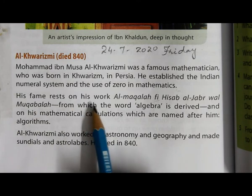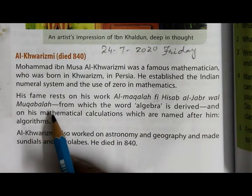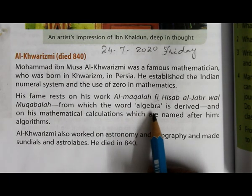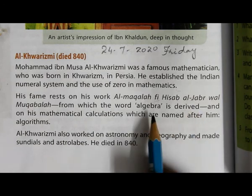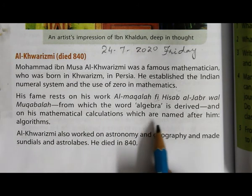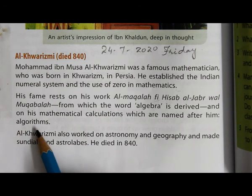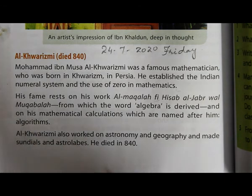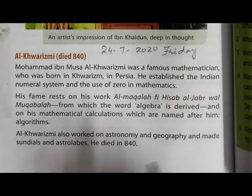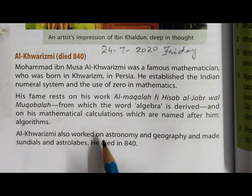His fame rests on his work 'Al-Mukhtasar fi Hisab al-Jabr wal-Muqabala,' from which the word algebra is derived. The algebra used in mathematics today is derived from his work. His mathematical calculations are also named after him — Algorithms — which is also very important. Logarithms and algorithms are both named after him.